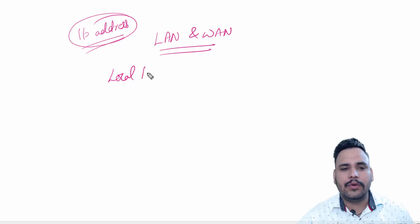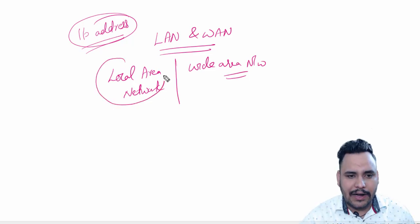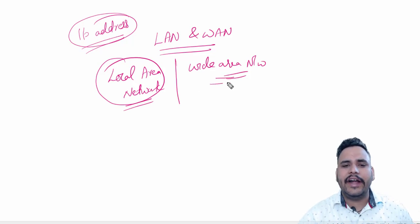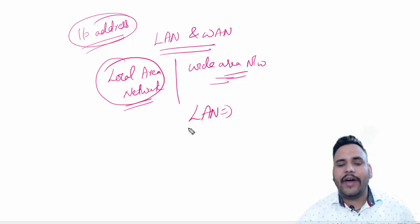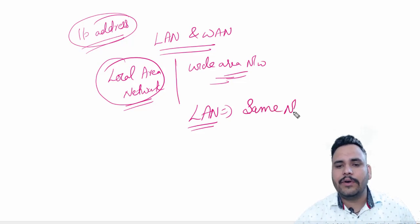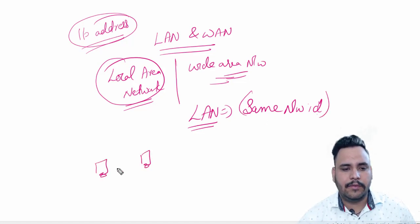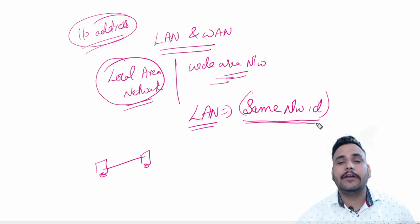Like, what is a local area network and what is a wide area network? I am going to start with local area network first, because in both local area network and wide area network we are going to use IP address. LAN means if devices are connected with each other with the same network ID — for example, if we have two devices connected with one cable, then they have the same network ID, which means they are in a LAN.